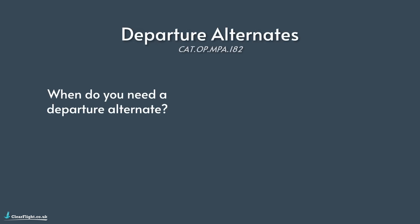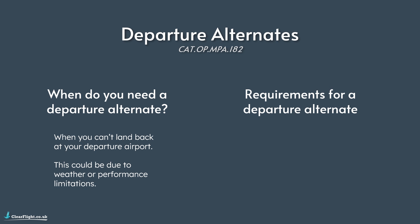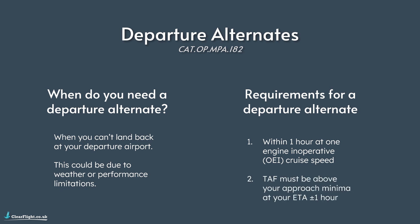When do you need a departure alternate? Quite simply, you need a departure alternate when you can't land back at your departure airport — this could be due to poor weather or landing performance limitations. When selecting a departure alternate, there are two requirements to check. First, the departure alternate aerodrome must be within one hour at your one engine inoperative cruise speed. Second, the TAF at your departure alternate must indicate that the weather will be above your approach minima at your ETA plus or minus one hour.